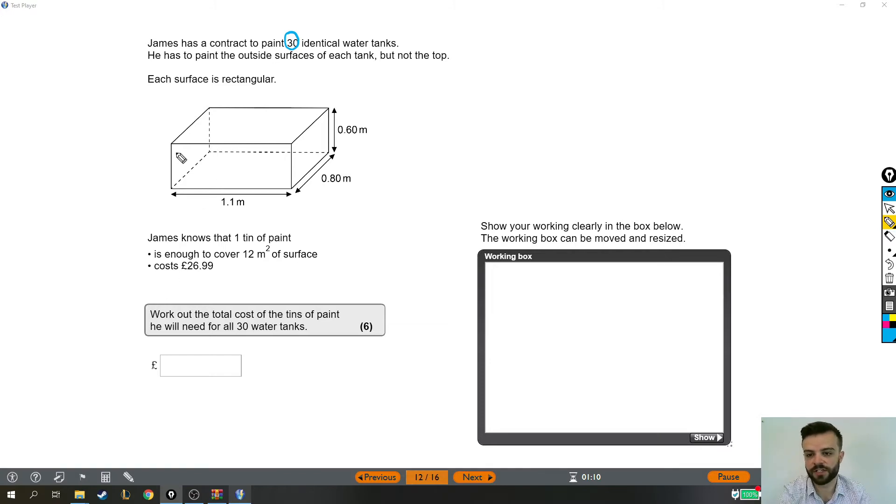If he needs to paint the outside surfaces of each tank, then we're going to be dealing with area. We're going to need to find the area of all of these surfaces so that we can work out the area he needs to paint. Now I'm just going to go around like this to help us identify all the different faces. This is the bottom I'm trying to do here. Okay, so the reason why I did that is because we are trying to find the area of all the surfaces around the outside that need painting.